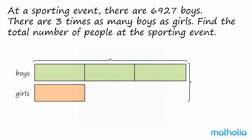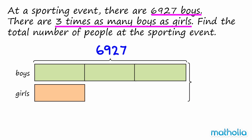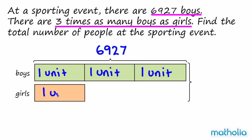Let's use a model to help find the answer. We know there are 6,927 boys, and there are 3 times as many boys as girls. If the number of boys is given as 3 units, then the number of girls is 1 unit. The total number of people at the sporting event is equal to 4 units.